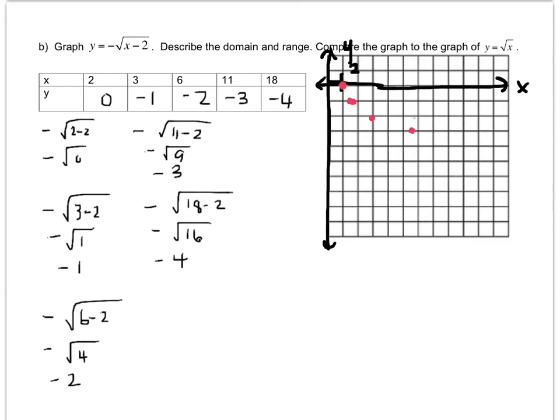And 18, negative four. So this is what it looks like when it's pointing downward. And again, you're looking for that half parabola. And I have to label it.